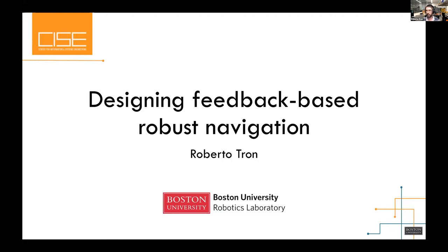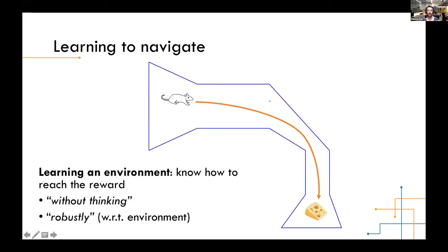In particular, we are looking at the problem of planning joint with controls and vision-based inputs. The problem we are looking at: imagine you have a robot — this is a project we're doing in collaboration with neuroscientists — so we also use a mouse as a robot model. The agent needs to navigate an environment to reach some goal location while avoiding obstacles, just by looking at where it is and getting visual cues from the environment.